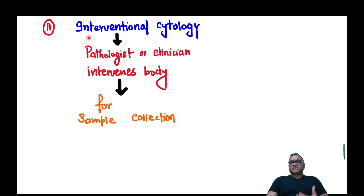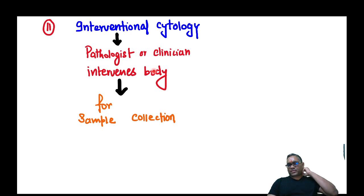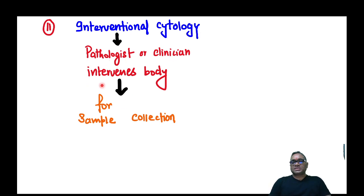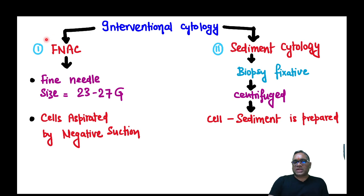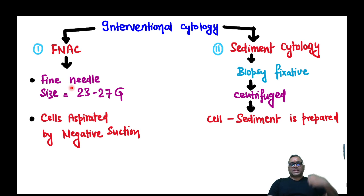The second branch is interventional cytology. As the name suggests, a pathologist or clinician has to intervene to take out the biopsy from the body. For example, if a patient comes with a lymph node, the pathologist performs FNAC. Interventional cytology has two sub-branches: FNAC and sediment cytology. In FNAC, a needle attached to a syringe is used to collect the sample.